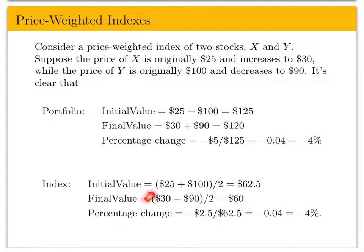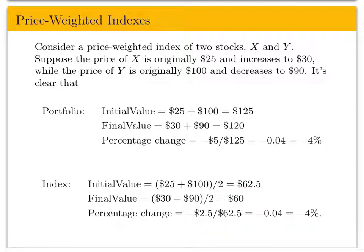Now let's take the index. The index is not the summation of values but the average of prices, so the initial index value is $62.50. The final value is ($30 + $90) / 2 = $60. That means you lost $2.50 on $62.50 — negative $2.50 divided by $62.50 — which is exactly the same as losing $5 on $125. The two numbers are divided by 2, and those wash out when you take the ratios.